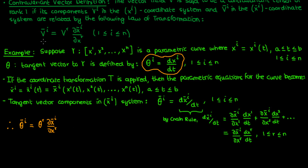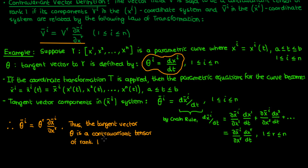If you look at this equation and compare it to the transformation law that we had when we defined contravariant vectors, they look pretty much the exact same with the exception of theta instead of v. The indices in both equations are in the superscript, and the partial derivative being multiplied is the partial derivative of the barred coordinate with respect to the unbarred coordinate. This proves that the tangent vector of a parametric curve is a contravariant vector because its components follow the transformation law of contravariant vector components.